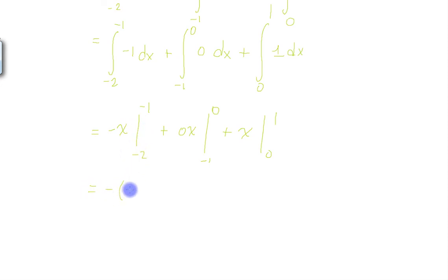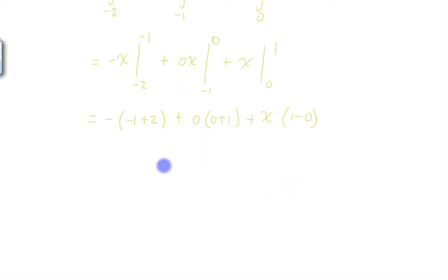Now this is going to be minus 1 minus minus 2, plus 0 times 0 minus minus 1, plus 1 minus 0. This is 0 again. This is going to be negative 1 plus 0.